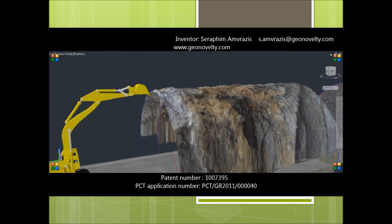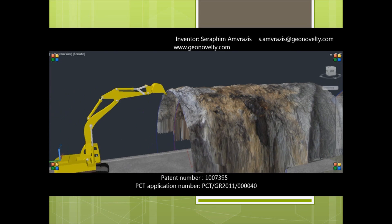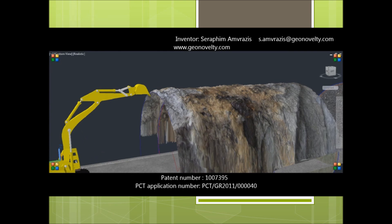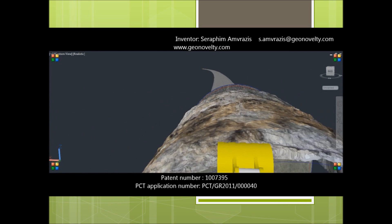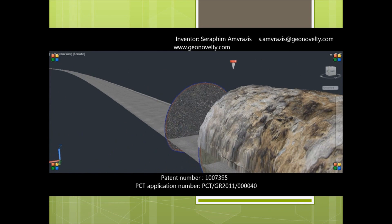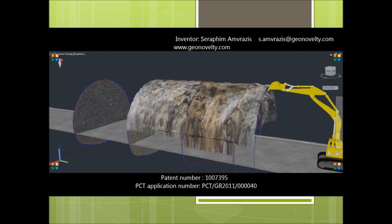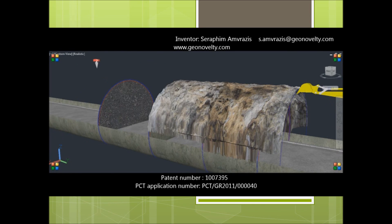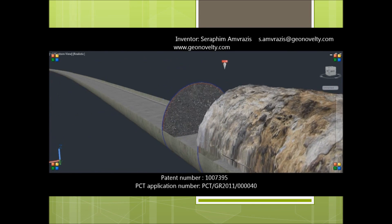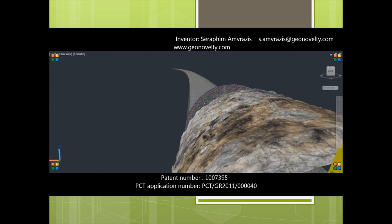Generally the excavation behavior for each particular soil is an unsolved issue that concerns many tunnel engineers. For every ten centimeters of over-breaks, the excavation cost may increase to more than a million euros per kilometer. The domino effect that may come from bad excavation prediction follows the project until the end.